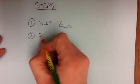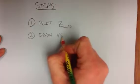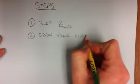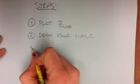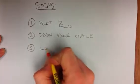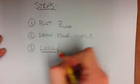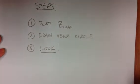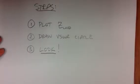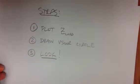You draw something called a VSWR circle, and you look. Those are the steps. It doesn't get much easier than that. So I'm going to show you some examples, and then you'll see how easy it is.